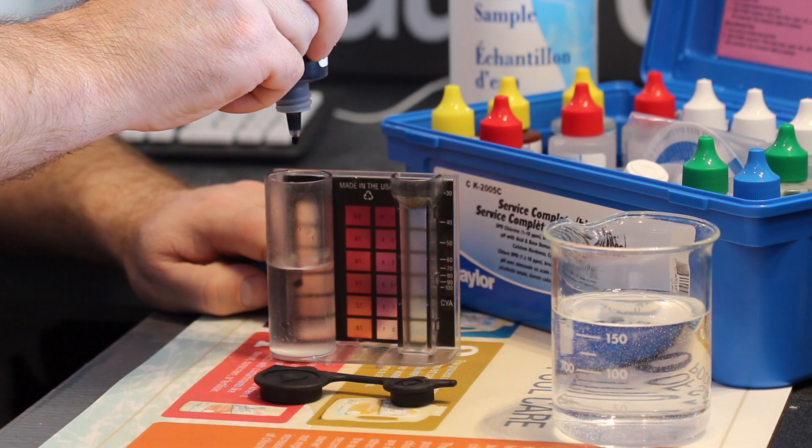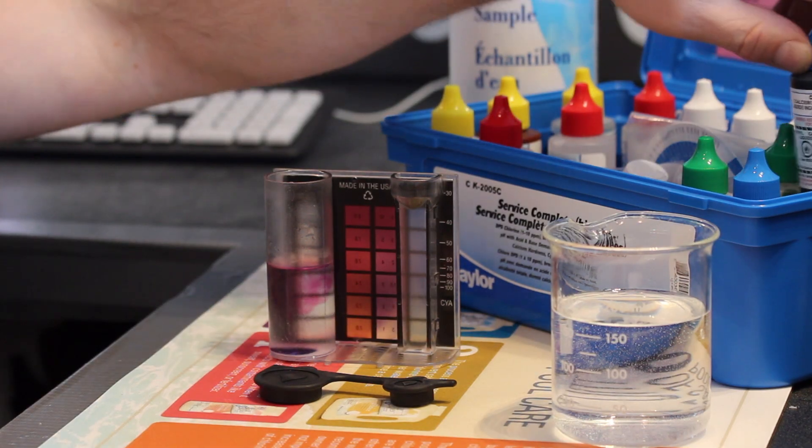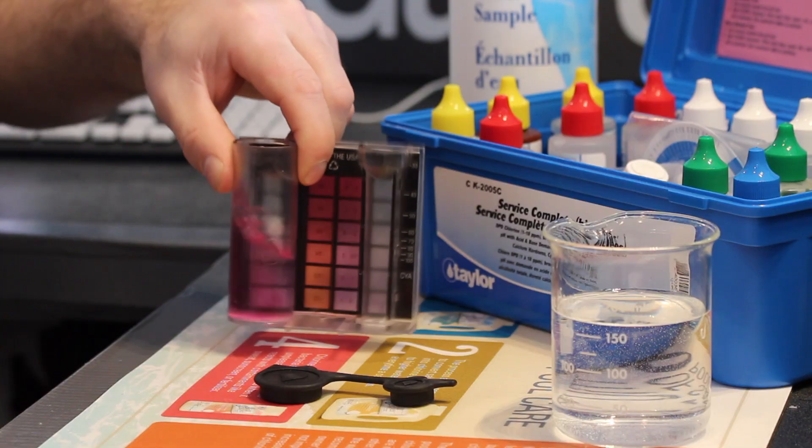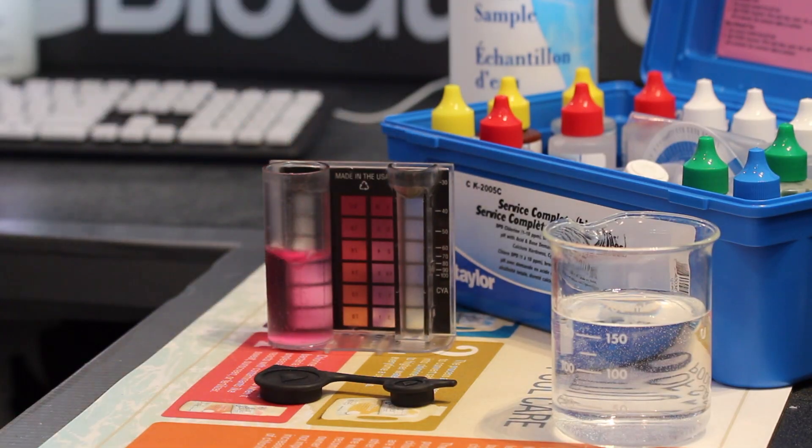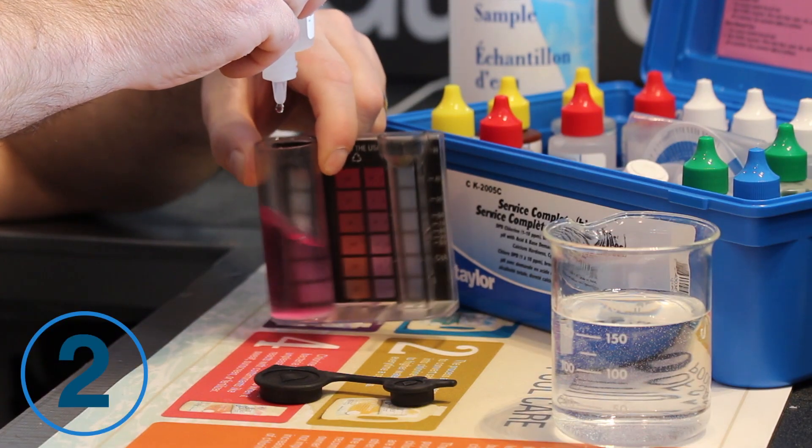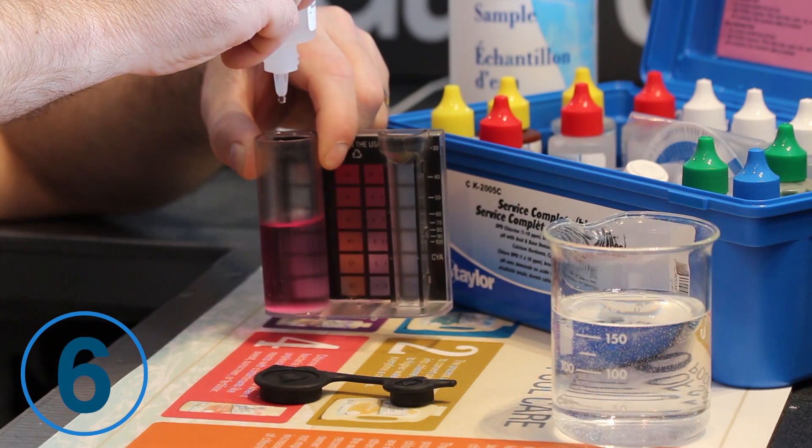Then add 5 drops of reagent number 11. The sample should turn to a reddish purple. Then add reagent number 12, counting each drop. Keep swirling the tube as you add the drops.